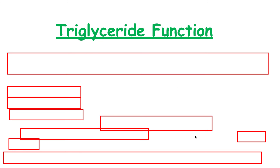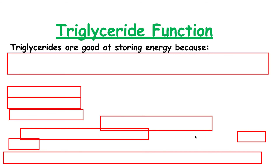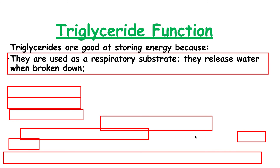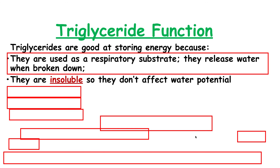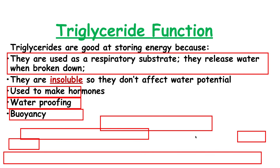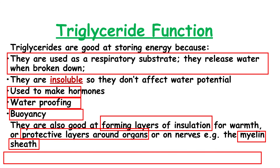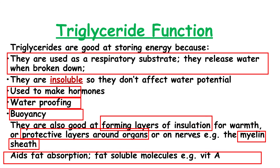We need to know about the triglycerides' functions. They are used as a respiratory substrate because they release a lot of water when broken down — this is why animals like camels store fat inside their humps, not water. They are insoluble, so they don't affect water potential. They are used to make hormones, for waterproofing, and are good for buoyancy. They also form multiple layers of insulation such as the myelin sheath, and aid fat absorption — for example, vitamin A.